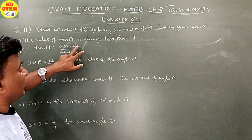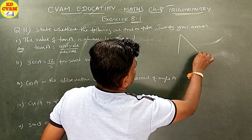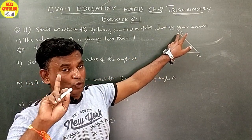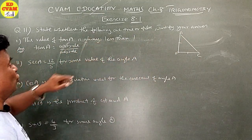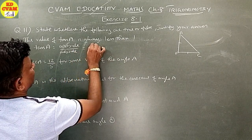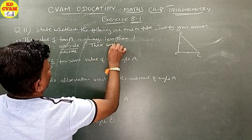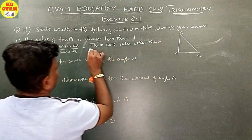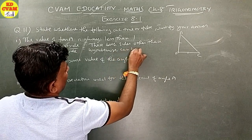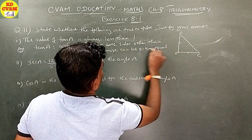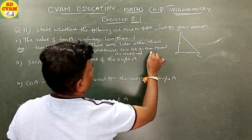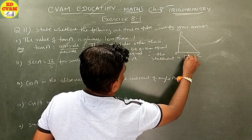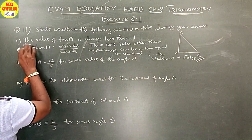In a right-angled triangle, the opposite side and adjacent side can be either equal or unequal. If they are equal, tan A equals 1. If they are unequal, tan A can be less than or greater than 1. Therefore, the statement is false.